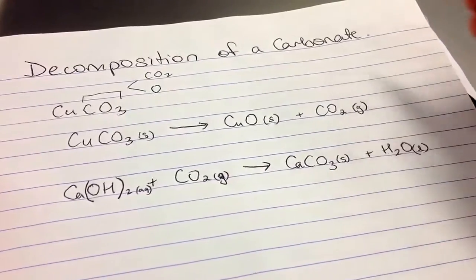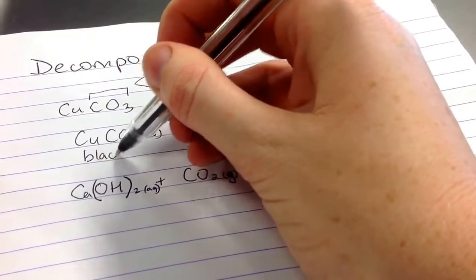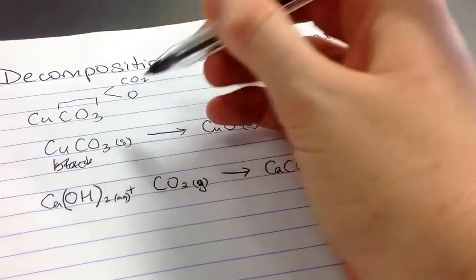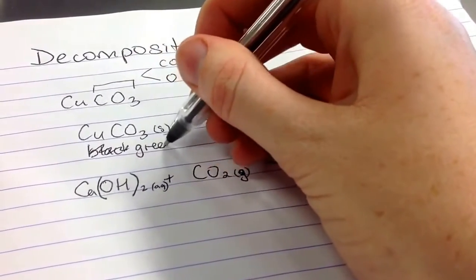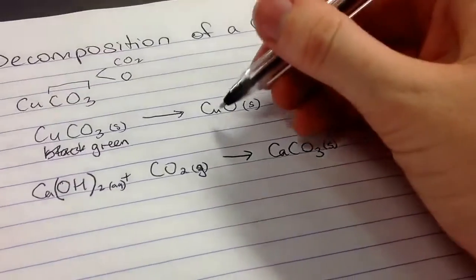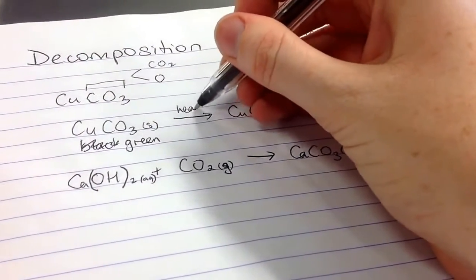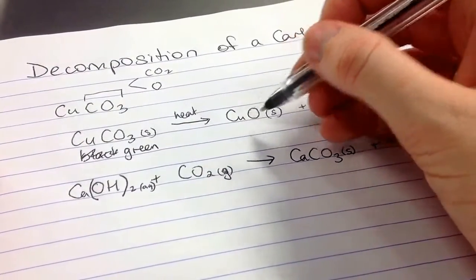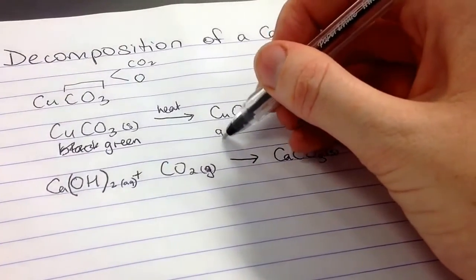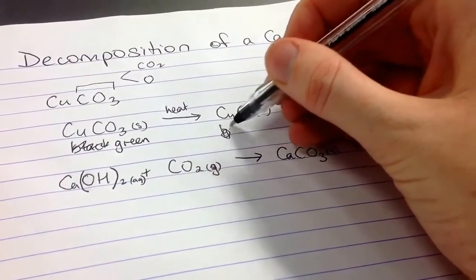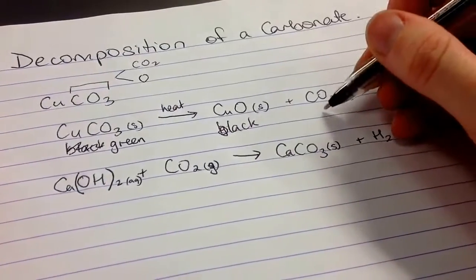So what we actually saw there is this powder was black. Oh sorry, that powder was green. And when it reacted with heat, we just heated it. And it's unstable enough to break down into this black compound. And this gas.